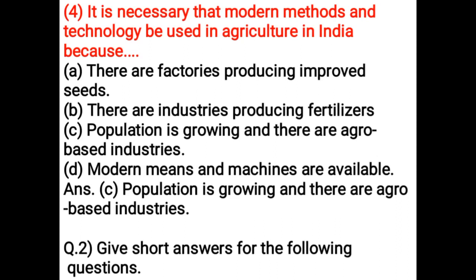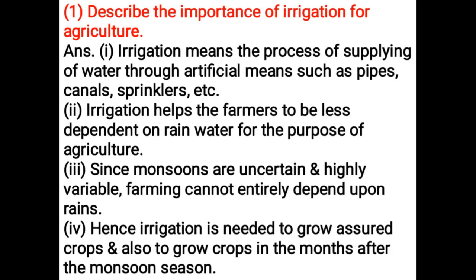Short answers — Describe the importance of irrigation for agriculture. Irrigation means the process of supplying water through artificial means such as pipes, canals, sprinklers etc. Irrigation helps farmers to be less dependent on rainwater for agriculture. Since monsoons are uncertain and highly variable, farming cannot entirely depend upon rains.